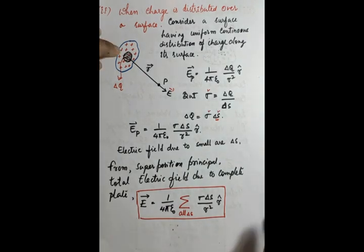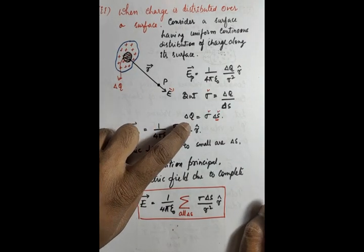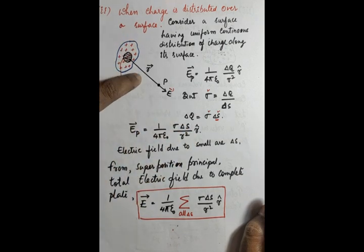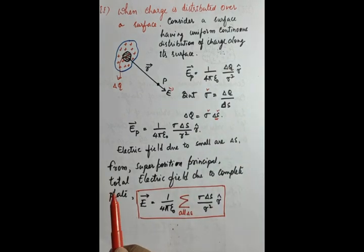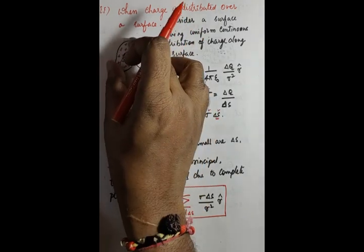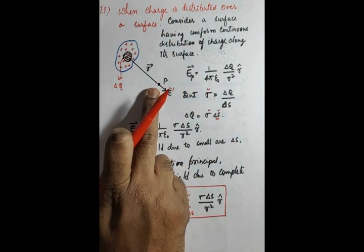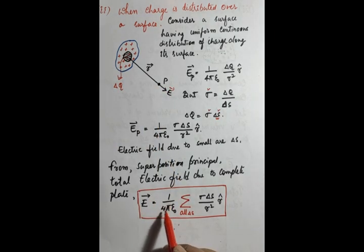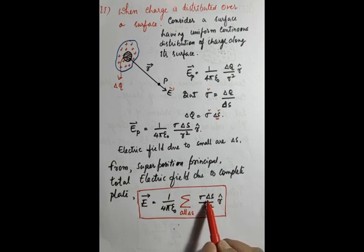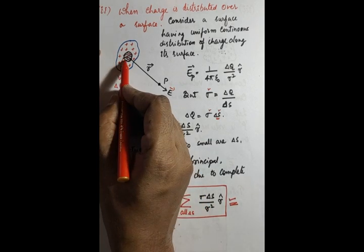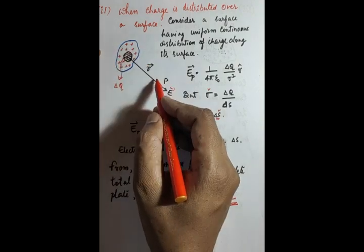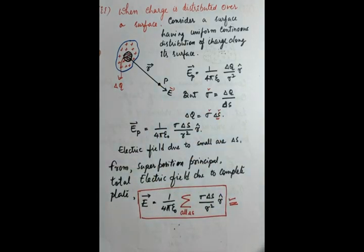To get the total electric field over the whole area, we apply the superposition principle. Each small area element δS contributes an electric field at point P, and by vector summation (superposition), we get the total electric field: E = (1/4πε₀) × Σ(σ · δS / r²) · r̂. Next, we study when the charge is distributed over a volume.